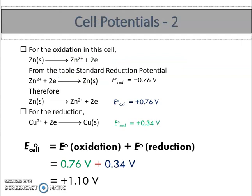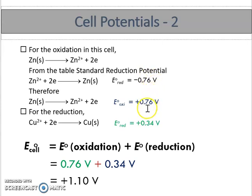Now let's use the second formula. Again, zinc is the anode and copper is the cathode. The value given is E⁰reduction for zinc = −0.76 V, but since zinc undergoes oxidation at the anode, we need to change the sign: E⁰oxidation for zinc = +0.76 V.